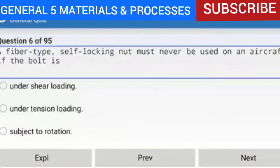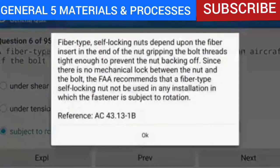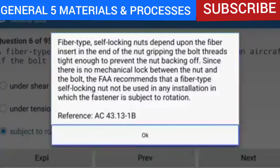Question 6: A fiber-type self-locking nut must never be used on an aircraft if the bolt is subject to rotation. Fiber-type self-locking nuts depend upon the fiber insert gripping the bolt threads tight enough to prevent the nut backing off. Since there is no mechanical lock between the nut and the bolt, the FAA recommends that a fiber-type self-locking nut not be used in any installation in which the fastener is subject to rotation.